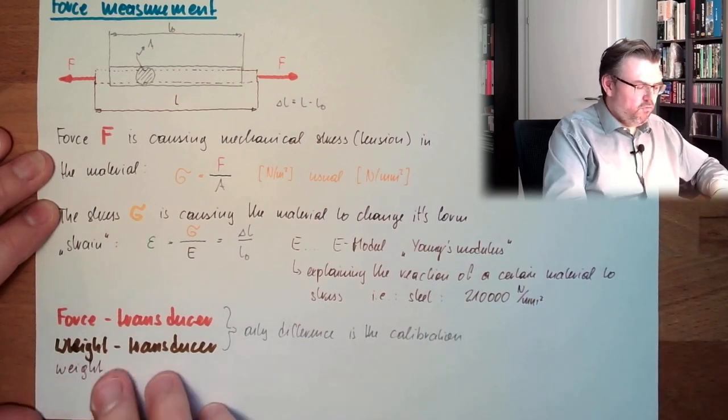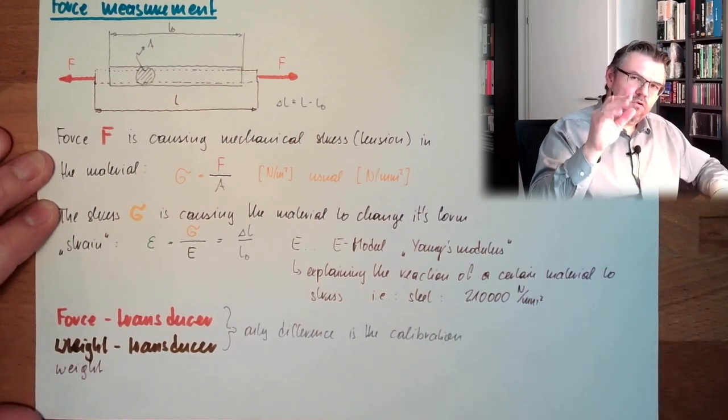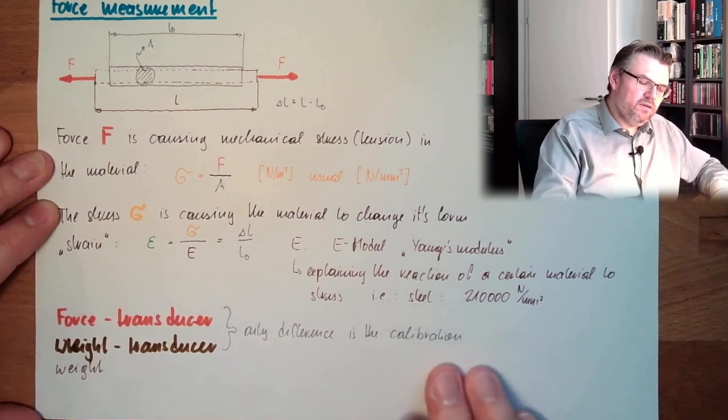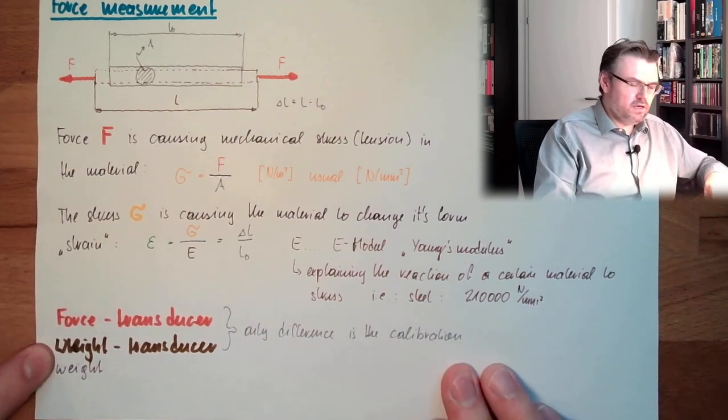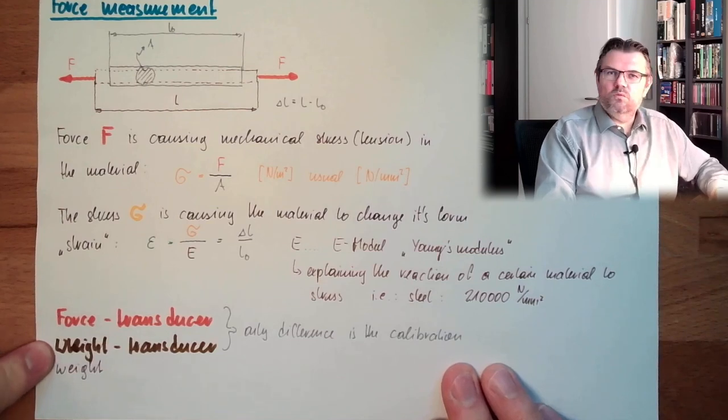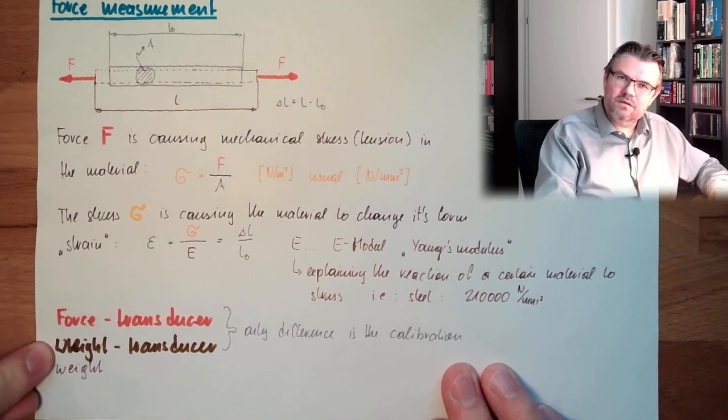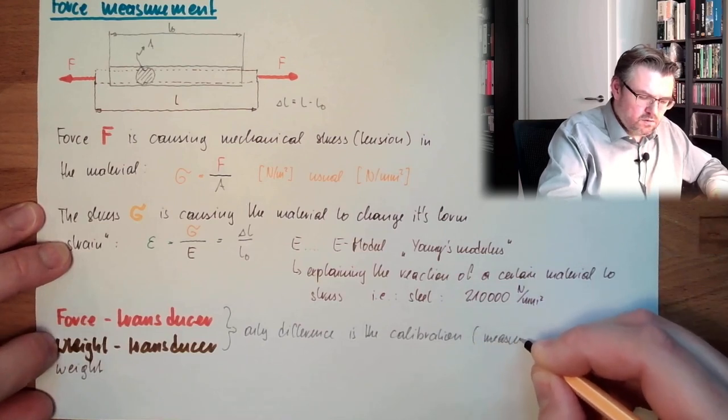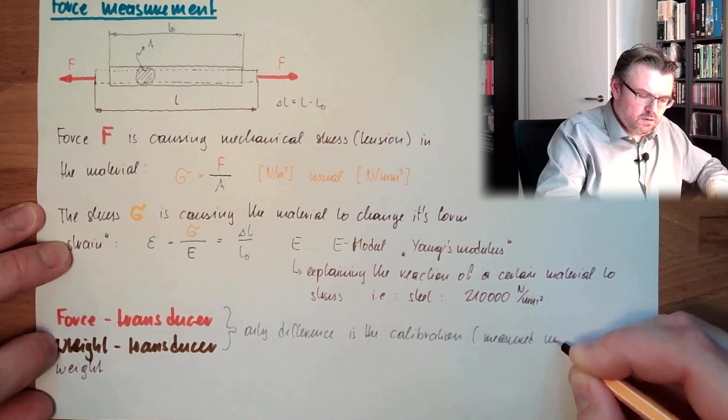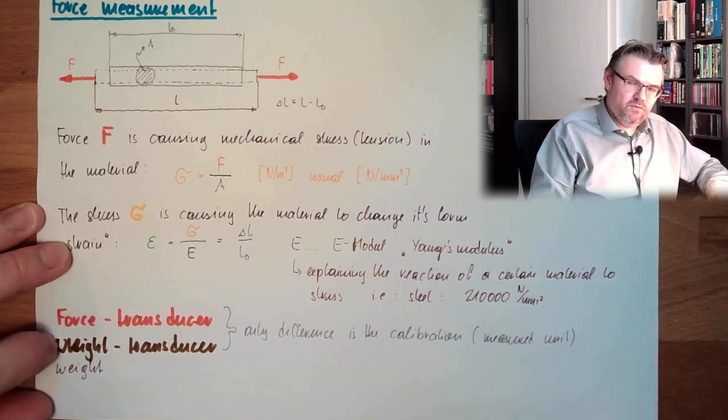So force transducers and weight transducers work exactly the same way. The only difference is the calibration. This is calibrated in newton and this is calibrated in kilograms or tons or whatever, in a weight unit. That's the only difference.